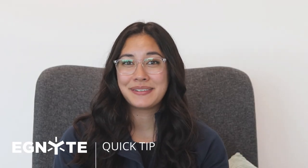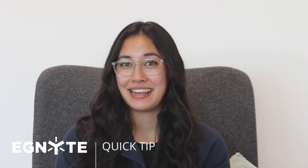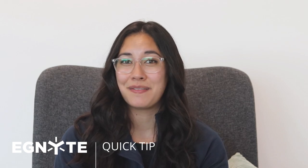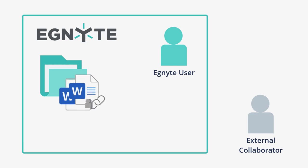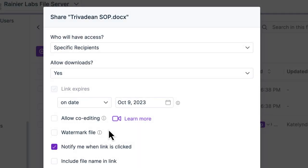Ignite's co-editable links facilitate secure collaboration in real-time by allowing recipients to co-edit the office files you share. Whether your recipient is an Ignite user or an external collaborator without access, you can choose to allow co-editing directly from your Ignite link.